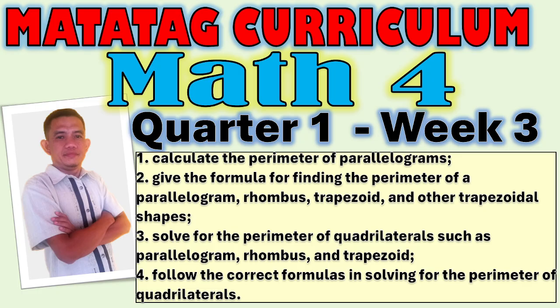Give the formula for finding the perimeter of a parallelogram, rhombus, trapezoid, and other trapezoidal shapes. Solve for the perimeter of quadrilaterals such as parallelogram, rhombus, and trapezoid. And follow the correct formulas in solving for the perimeter of quadrilaterals.